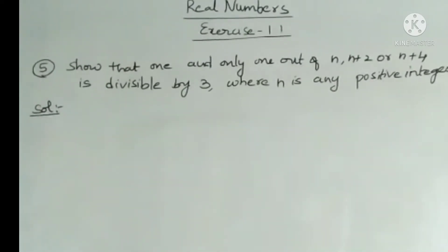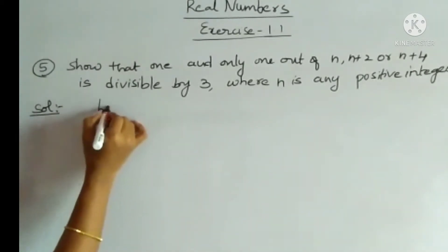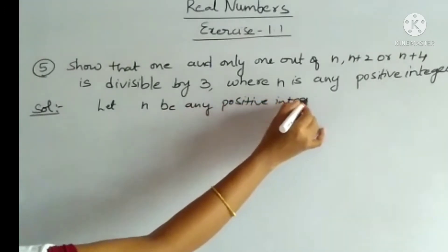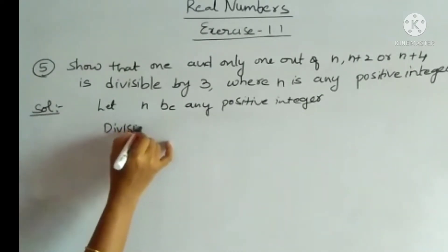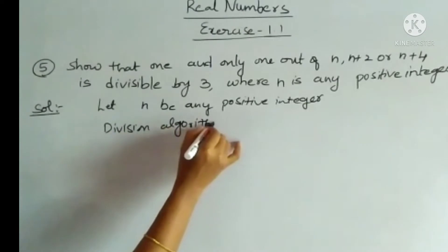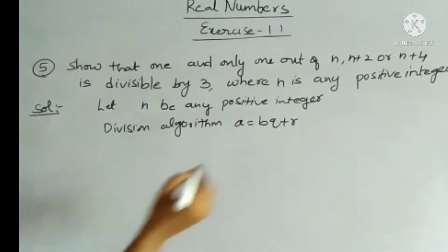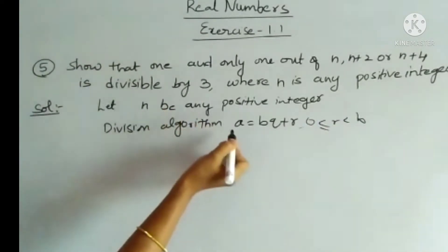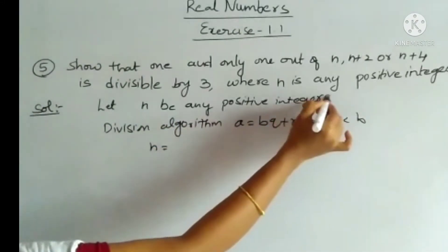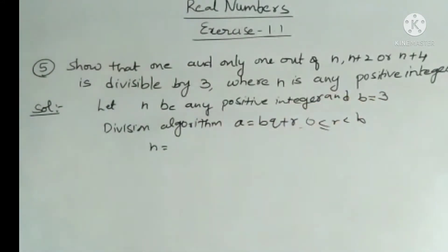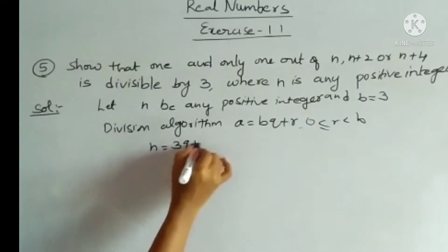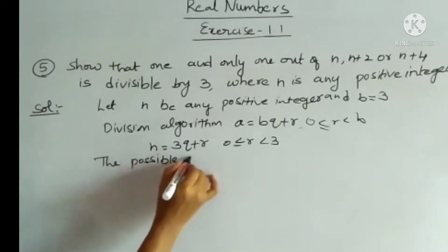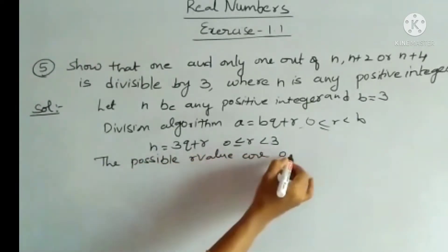In the solution, let n be any positive integer. We have a = bq + r, where 0 ≤ r < b. Here, in place of a we use n, and b = 3, so n = 3q + r, where 0 ≤ r < 3. The possible values of r are 0, 1, and 2.